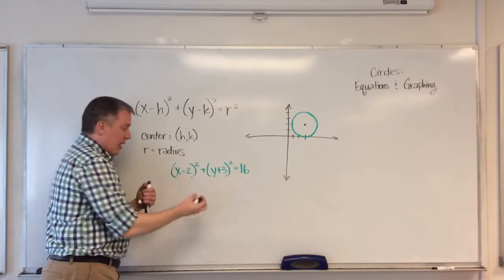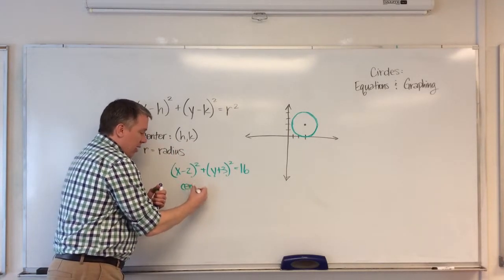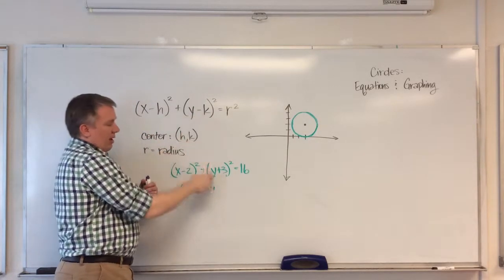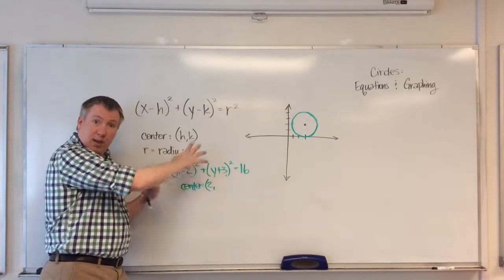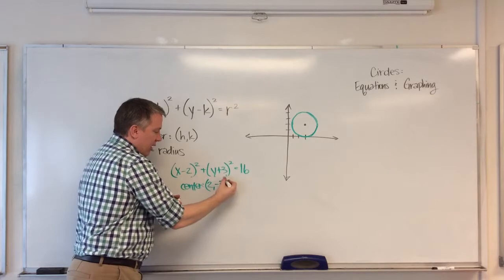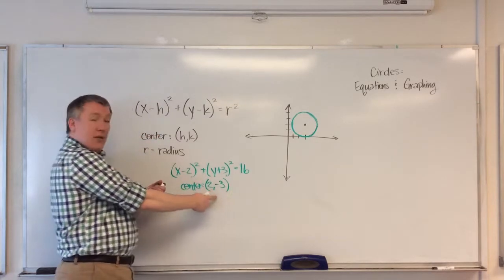So it would mean my center is at 2. And this says minus k, and that says plus 3, so that must mean that it's the opposite. So k must be negative 3. So my center is at the coordinates 2, negative 3.